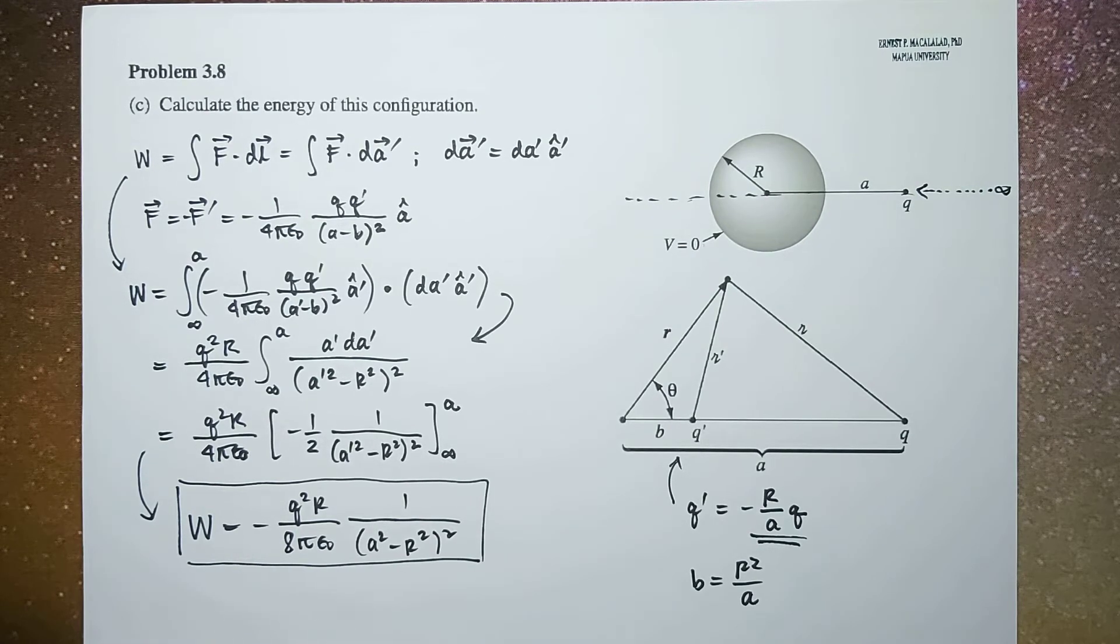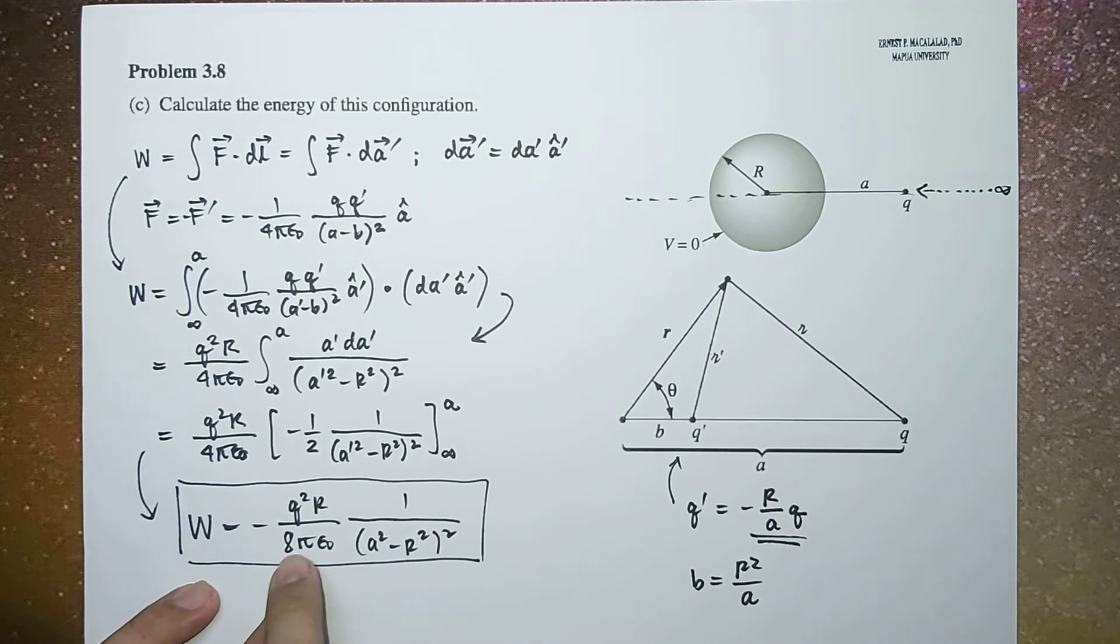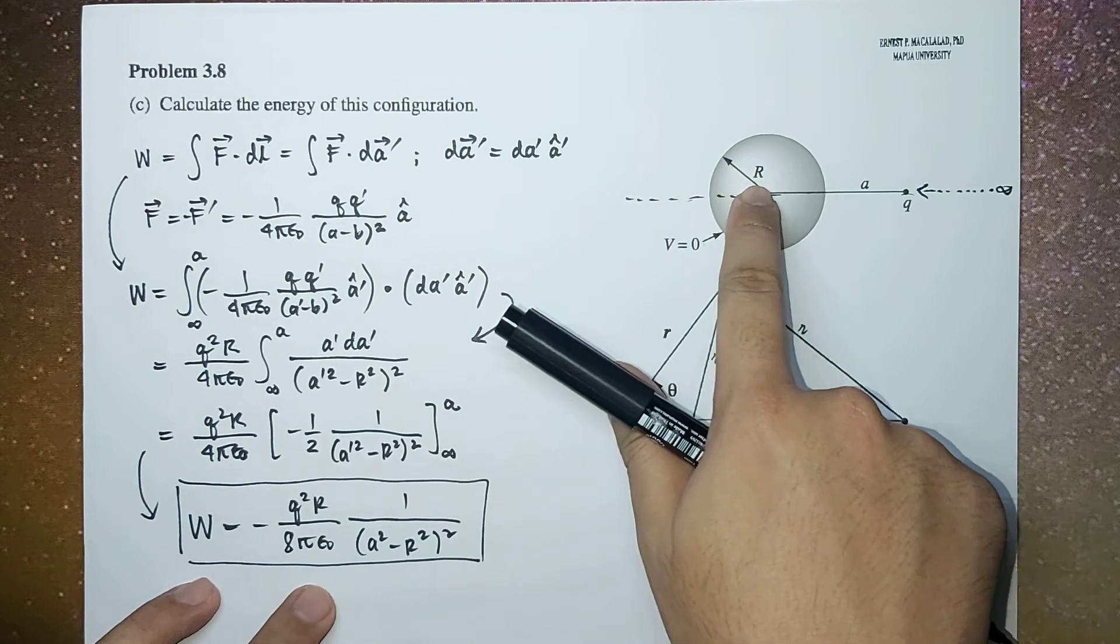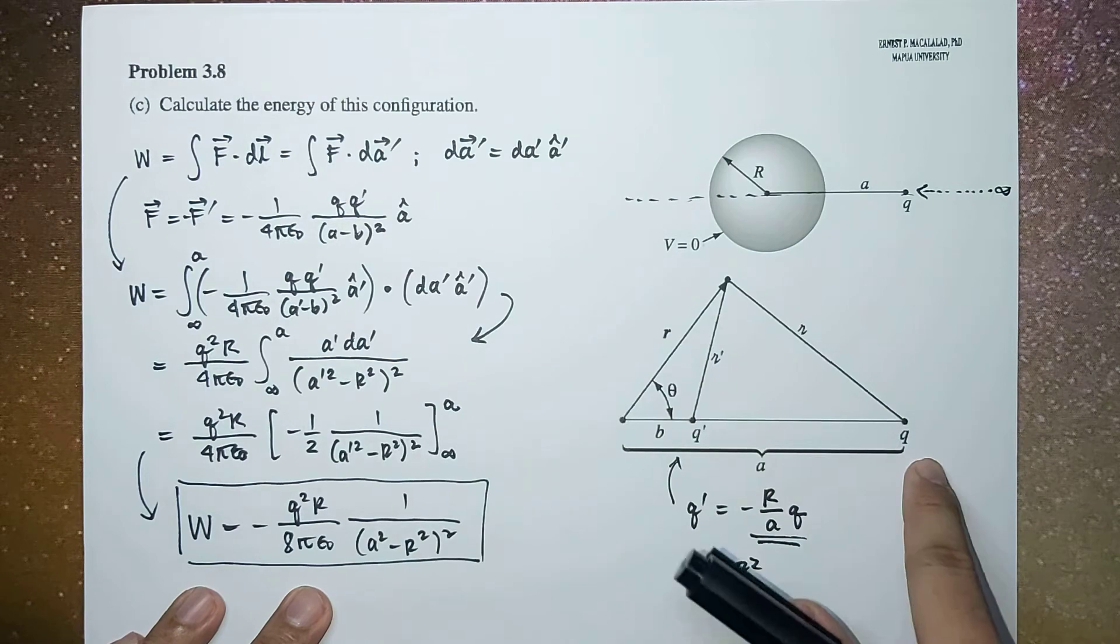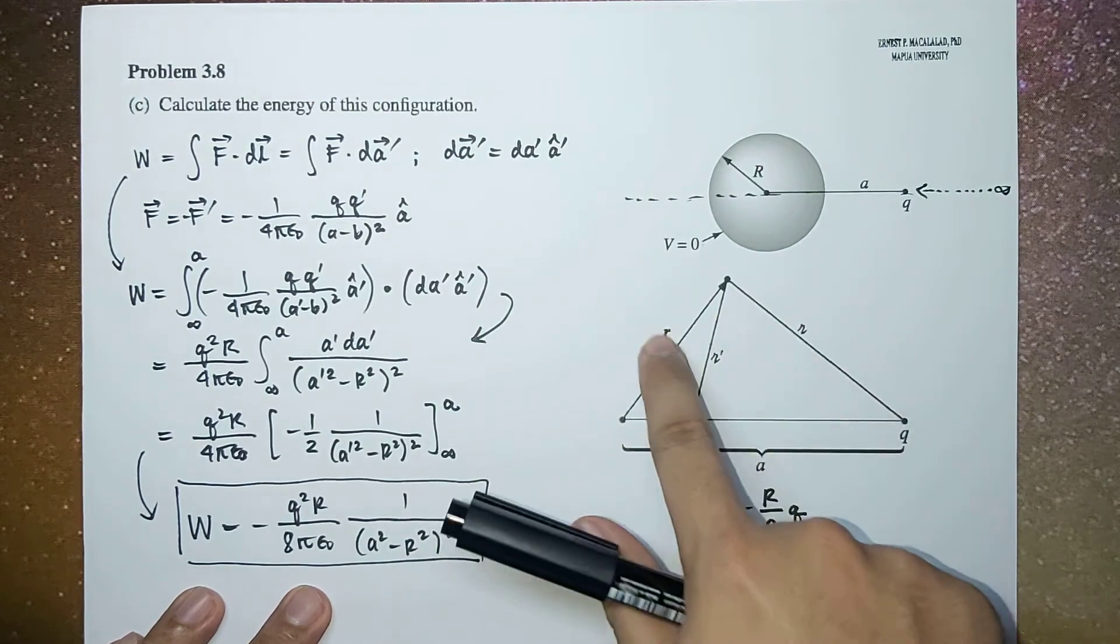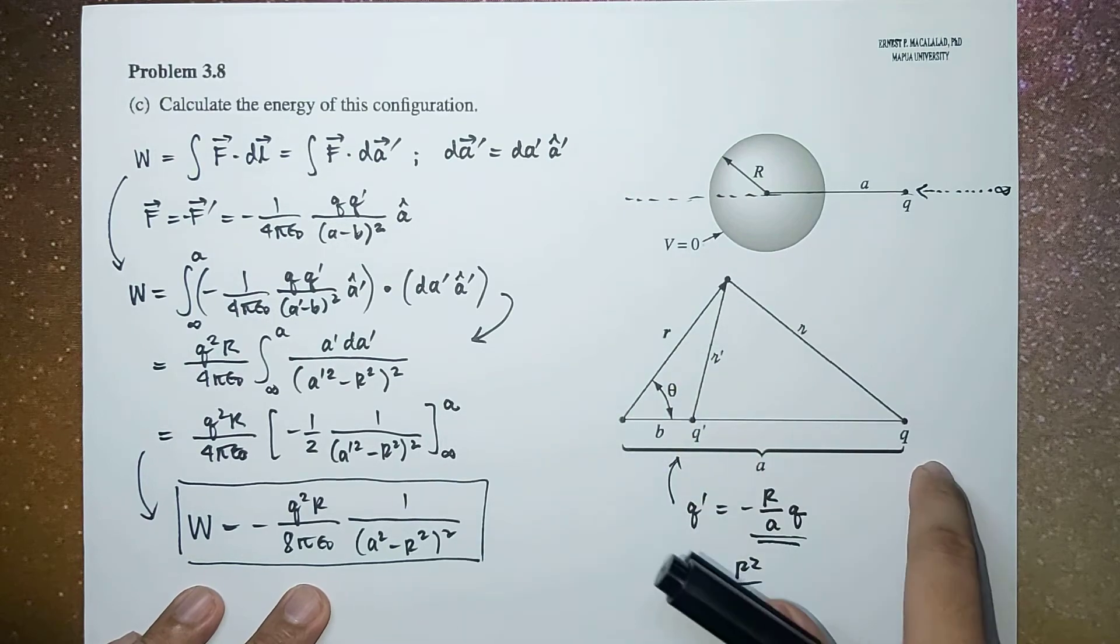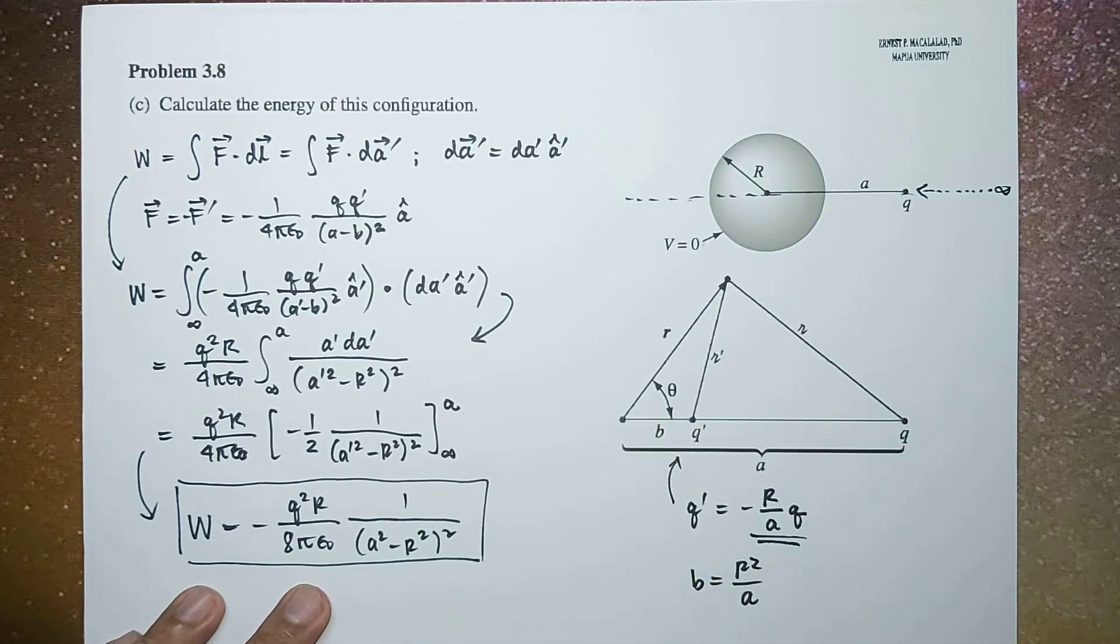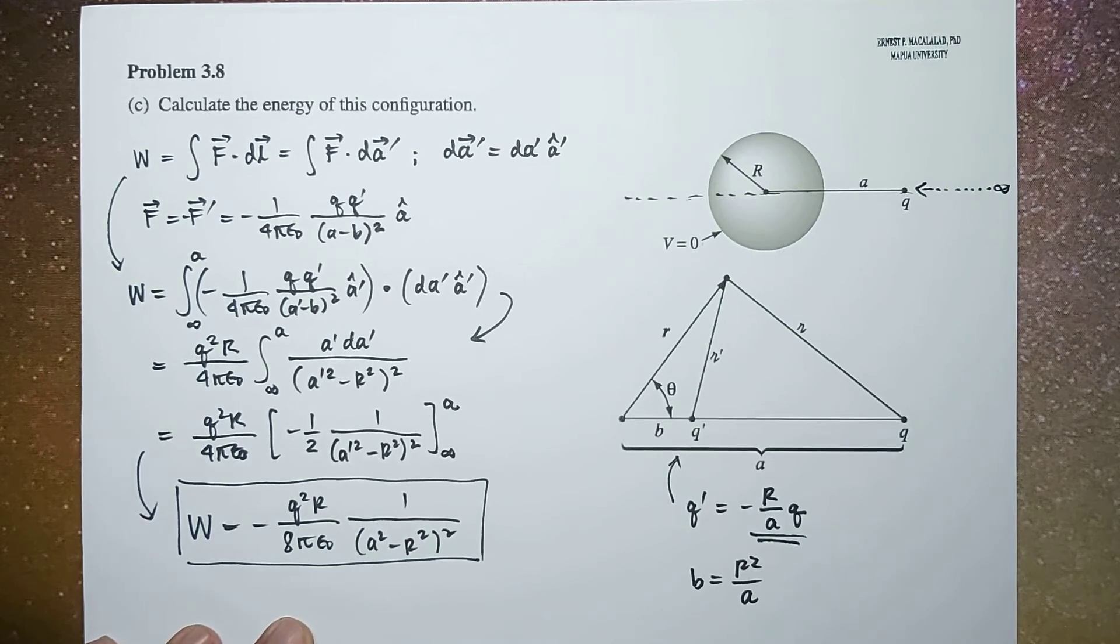Again, as you will notice, we express our equation in terms of these variables only—r, a, and q—and not our variables we set here, because everything here, r and the two script r's and b and theta, are all arbitrary variables.